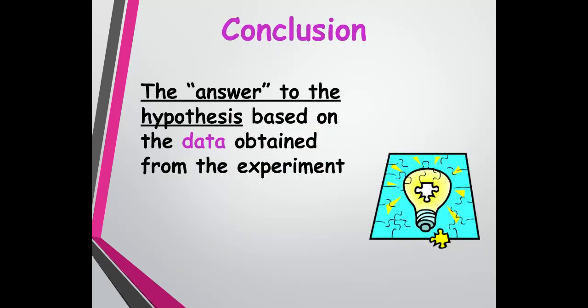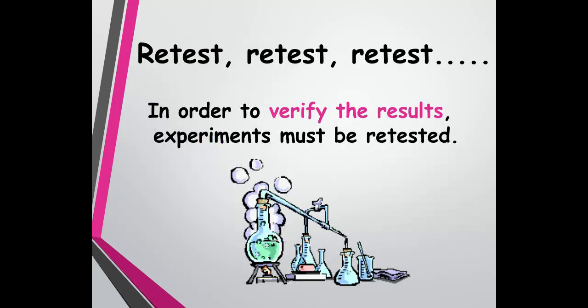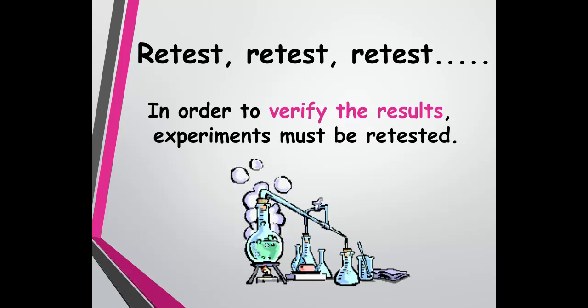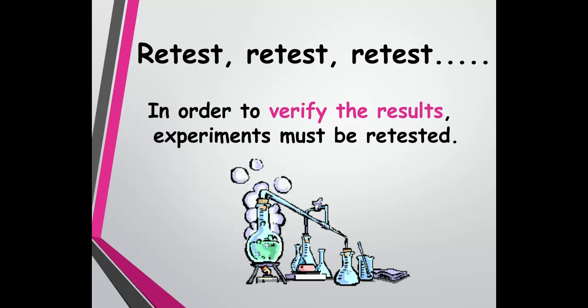The conclusion is just the answer to your hypothesis based on the data you get in your experiment — a summary of what happened. Then, of course, we retest and retest because we want to verify our results, making sure what we're doing in this experiment is the reason for the outcome. The more data you have supporting that, the stronger that conclusion is.